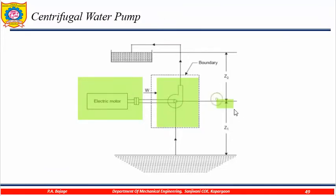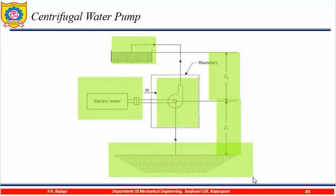...you can see this is the datum reference Z1, and above the shaft to the delivery tank, you have datum reference Z2, where the water is delivered in this overhead tank, and this is the reservoir from where the water is collected.